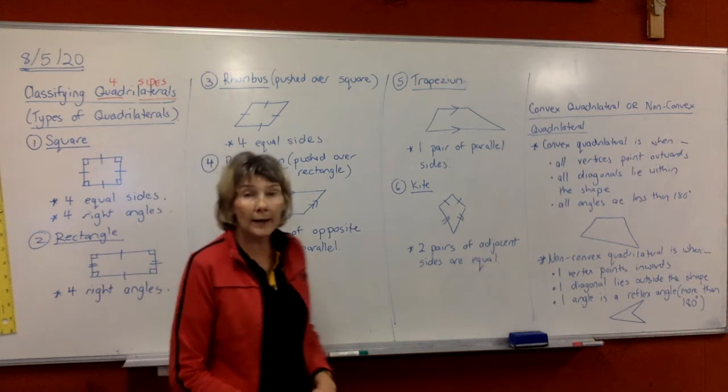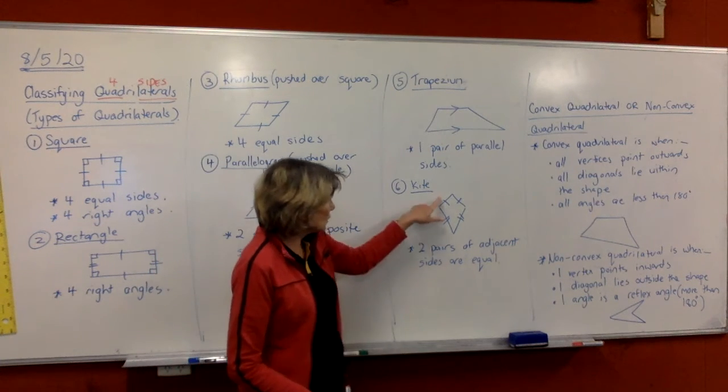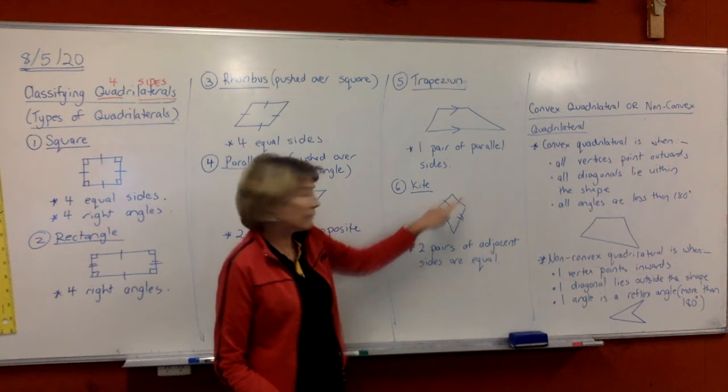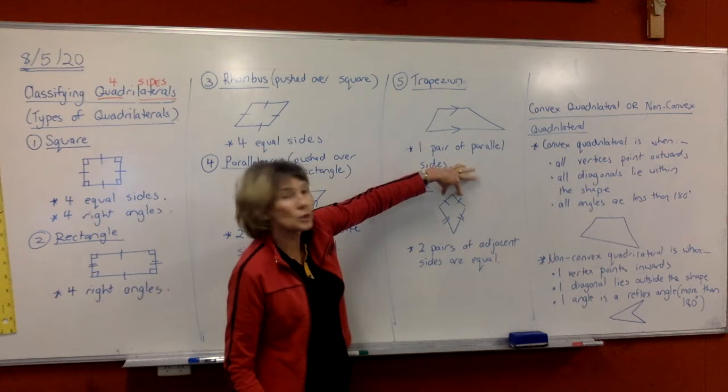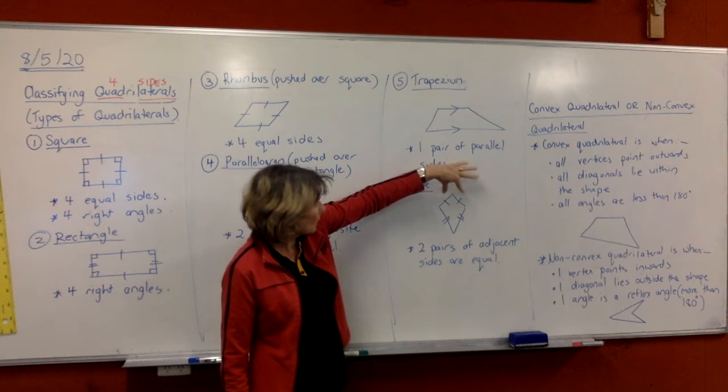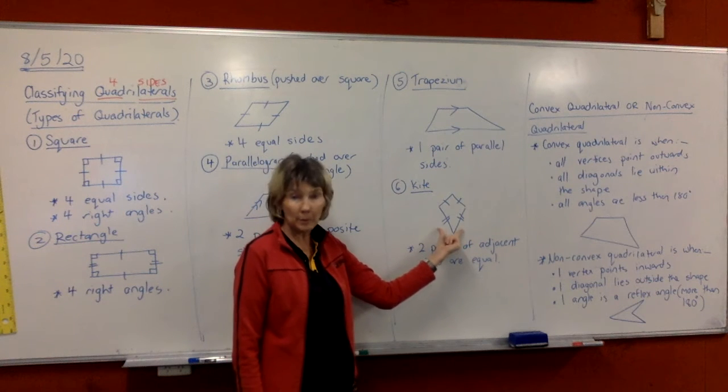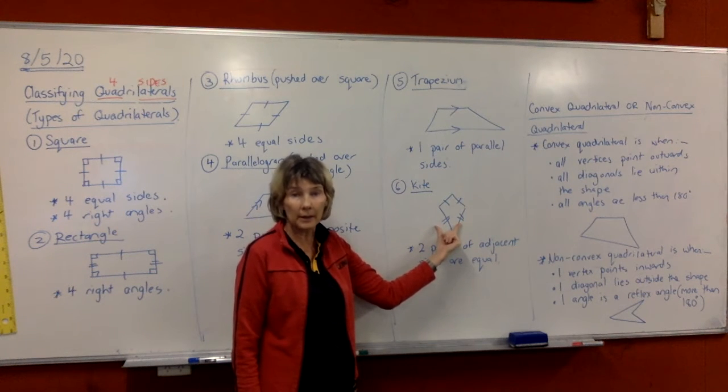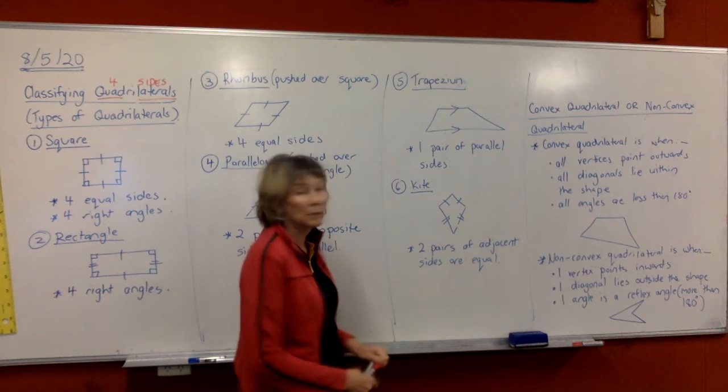In number six, a kite is just like the kite that flies in the sky. So these two sides are equal and these two sides are equal. So we say that these two sides are next to each other or adjacent. So we have a pair of adjacent sides that are equal and here's another pair of adjacent sides that are equal. So we have two pairs of adjacent sides being equal in the kite.